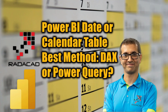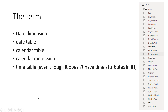A date table is one of the common tables in any BI analysis solution. There are different terms for it — some people call it date table, some people call it date dimension, calendar table, calendar dimension, or even timetable. However, an actual timetable should have time buckets with one row per time bucket, such as minutes, seconds, or hours. If you have a table with one record per day, that is more like a date table.